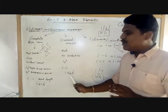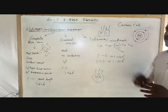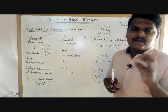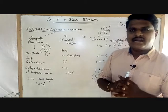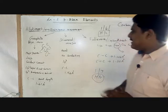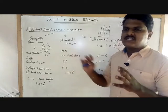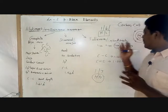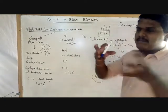The third allotrope is fullerene, with a bond length of 1.5 Ångströms. Its full name is Buckminsterfullerene. Fullerenes include C32, C50, C60, C70, and C76, all composed of carbon.